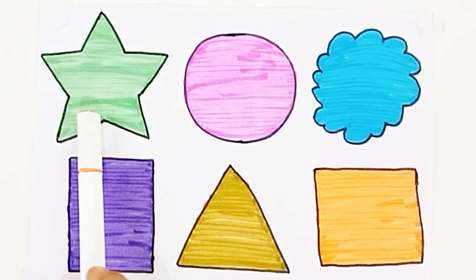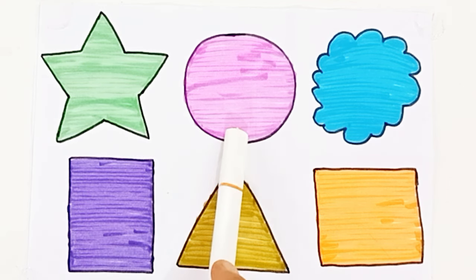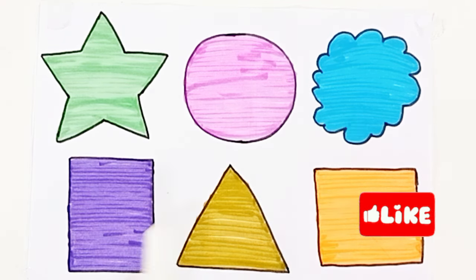Light green color, pink color, sky blue color, purple color, olive green color, orange color. Star, circle, cloud, vertical rectangle, triangle, square. See you in the next video.